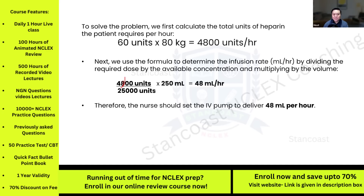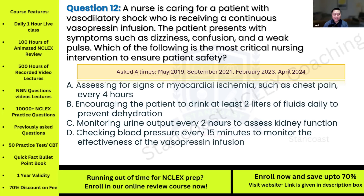Question twelve: A nurse is caring for a patient with vasodilatory shock who is receiving a continuous vasopressin infusion. The patient presents with dizziness, confusion, and a weak pulse. Which of the following is the most critical nursing intervention to ensure patient safety? This has been asked four times.